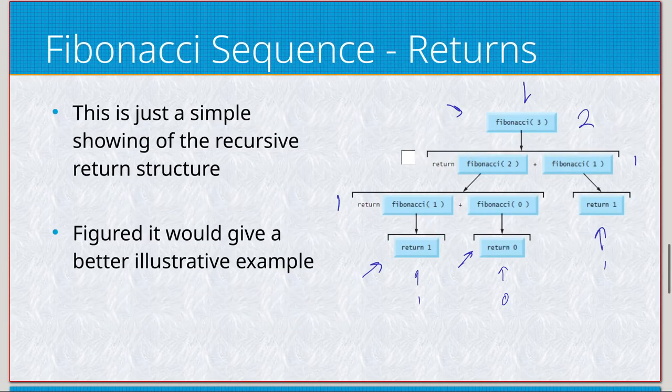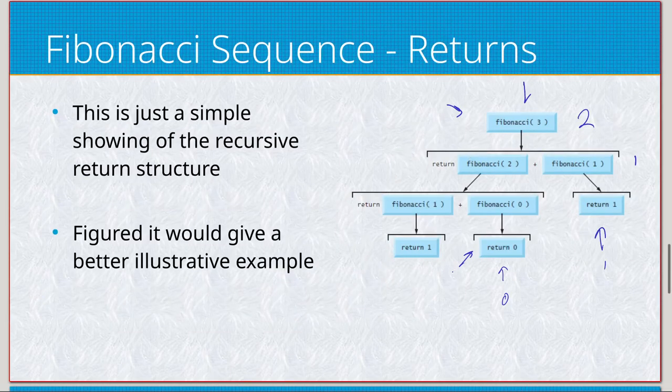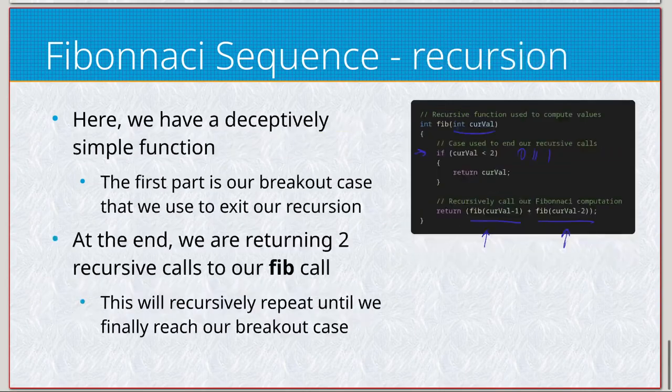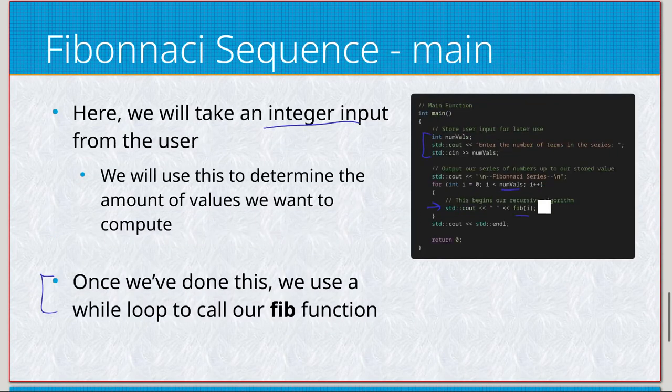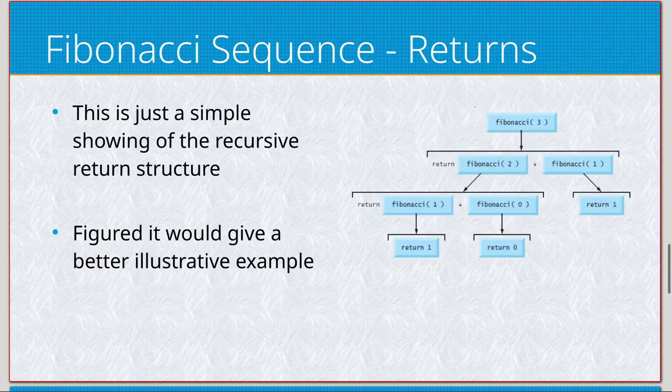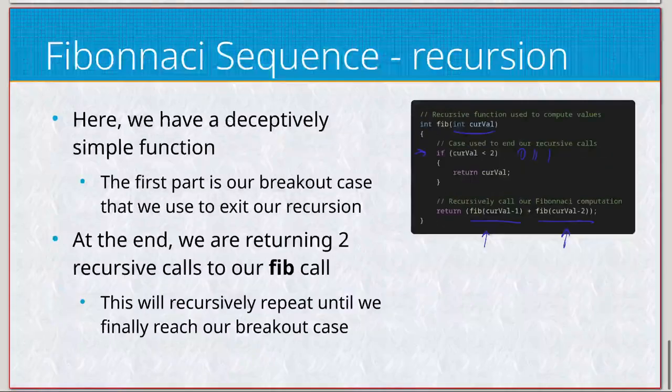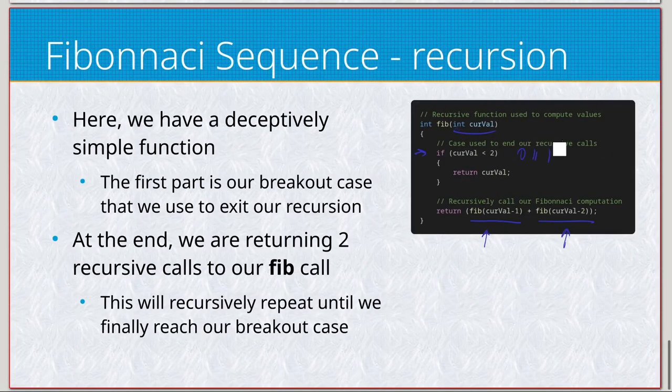Again, we can see that happening kind of here. Let me just erase this. I might be swapping back and forth a little bit here. So, let's imagine that right here. We call Fib of three. Okay? So, this is our first call. Fib of three. So, if we consider that the beginning of this, then we will say, okay, if current value is less than two, then return current value. It's not.